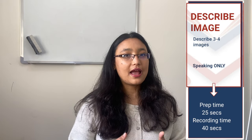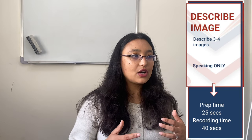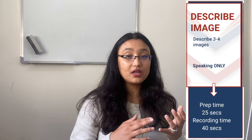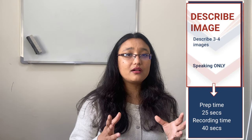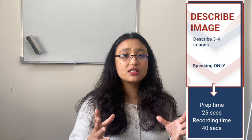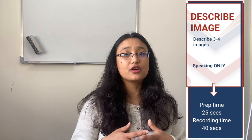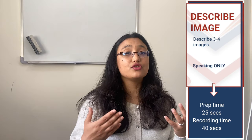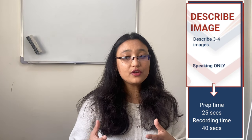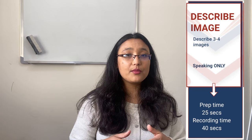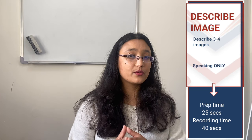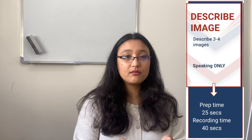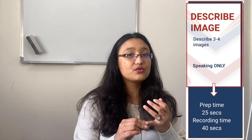The third question type is describe image. You will have three to four images, and these can be a pie chart, a bar graph, or images of people. Sometimes there are a lot of words and information and you're confused which to use. Describe image gives you three to four images and it only gives you speaking marks.